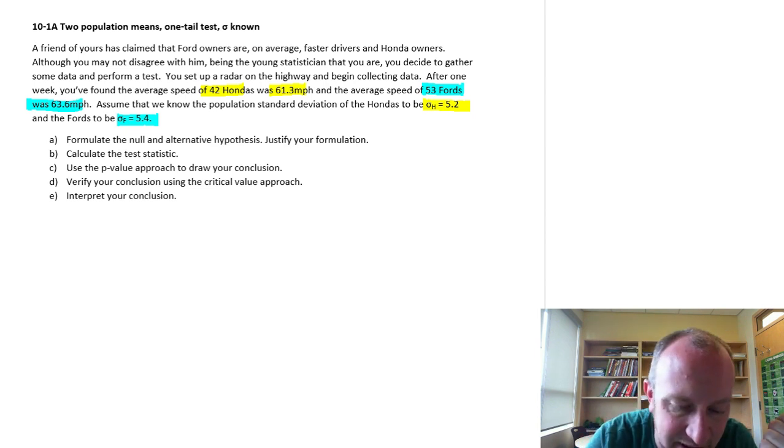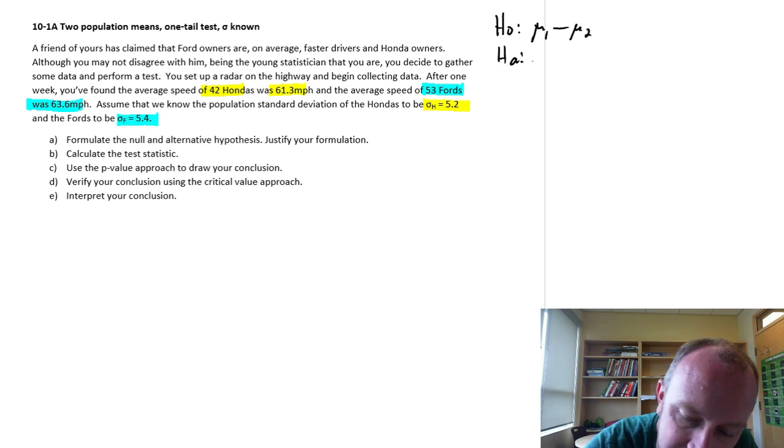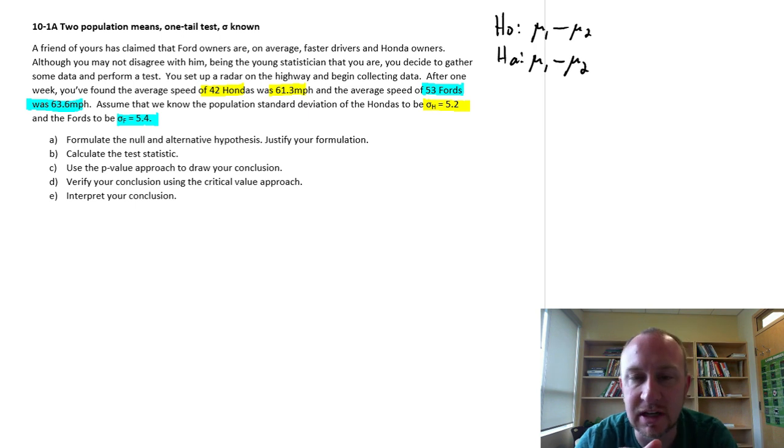Part A, formulate the null and alternative hypotheses. Okay, so this is where you'll see one subtle difference. When we formulate these tests, so now we're working with two populations, so I'm going to just right away put down my two populations. We're looking at the difference in two populations.